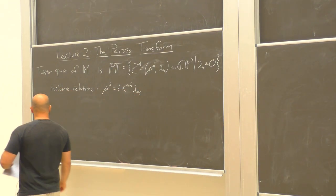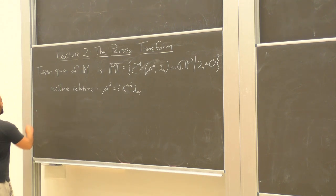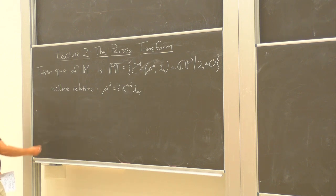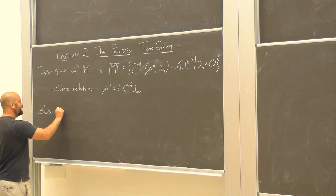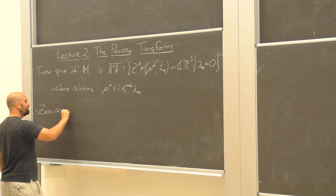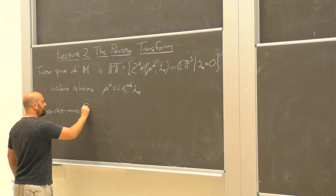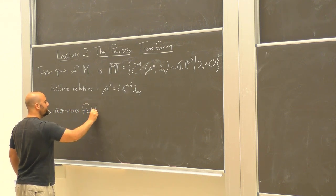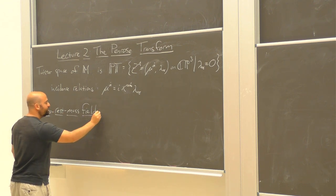So what are these partial differential equations? We're going to be talking about certain massless free fields in complexified Minkowski spacetime, which are often called zero rest mass fields, or ZRM fields.